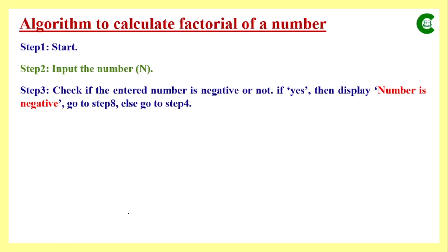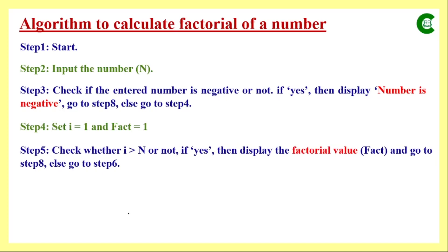If the number is not negative — meaning it is zero or a positive integer — we move to Step 4. There we take two variables: variable i with an initial value of 1, and variable fact (which stores the factorial result) also with an initial value of 1. Then in Step 5, we check whether i is greater than n, the number for which we want the factorial.